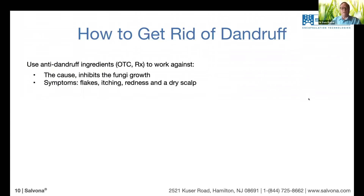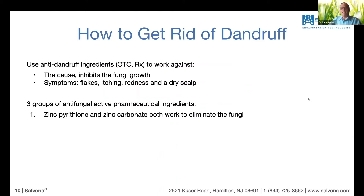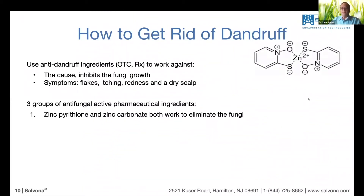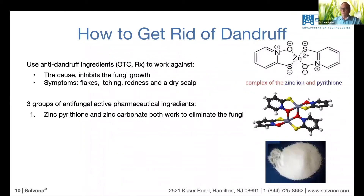There are different groups of anti-fungal APIs — active pharmaceutical ingredients. The most common are zinc pyrithione and zinc carbonate, both of which work to eliminate the fungus. This is the structure of zinc pyrithione: it's a little more complex, with four different rings associated with a zinc atom. The product itself consists of dry particles.